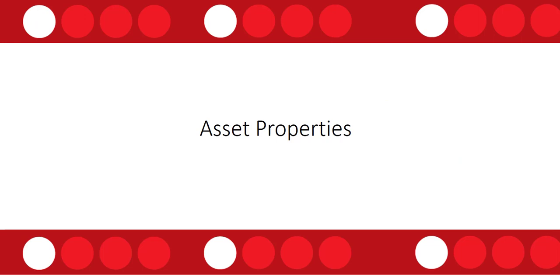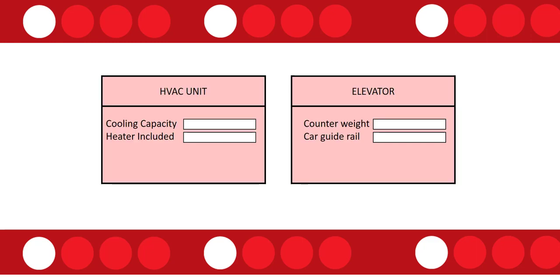Now let's look at asset properties — I really like this feature because it allows us to create unique information for every individual customer asset we track. For example, if you have an HVAC unit you might want to track the cooling capacity or whether a heater is included. If you have an elevator as a customer asset you might want to track the counterweight, whether it has a car guide rail, the size, and so on — that's kind of what asset properties allow us to do.